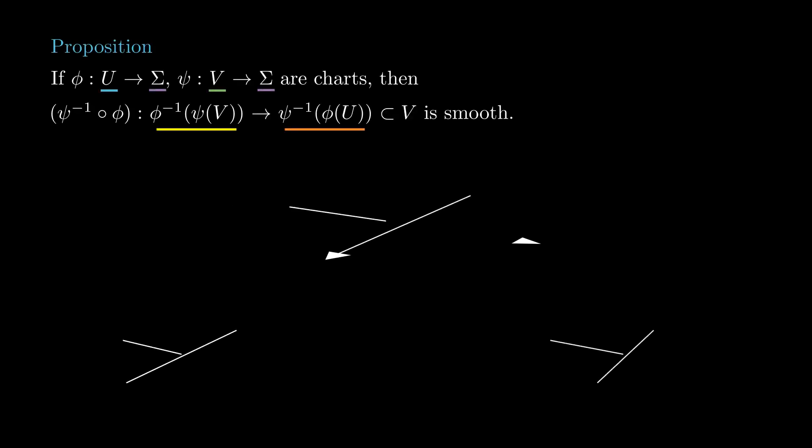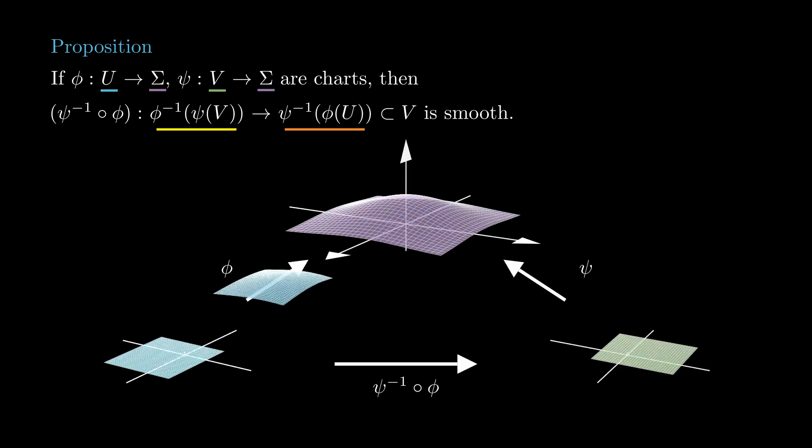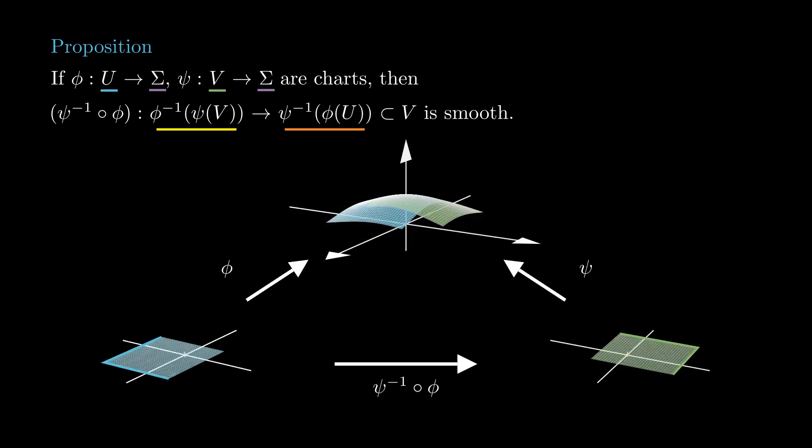The first step is to make a very important observation. Assume we have a surface and two charts, phi and psi, with domains u and v respectively. Then we can construct a map psi inverse phi from a subset of u to r2. We call this map a change of coordinates.